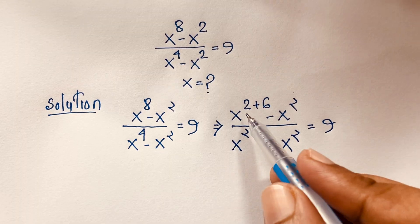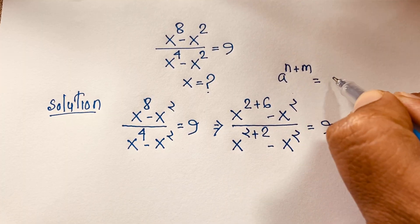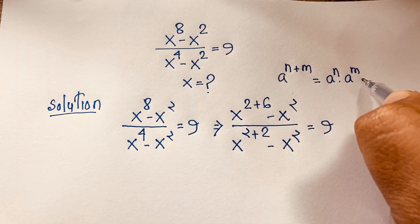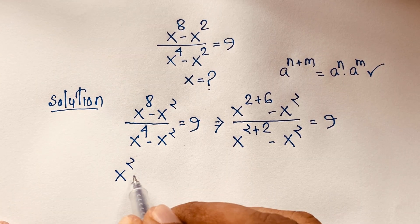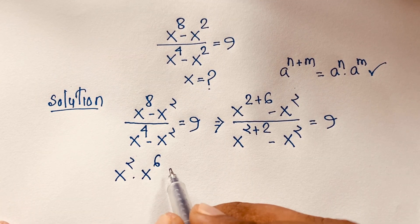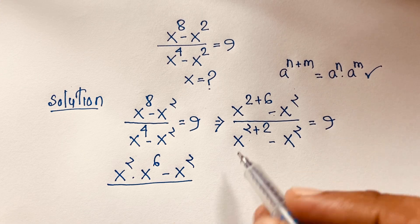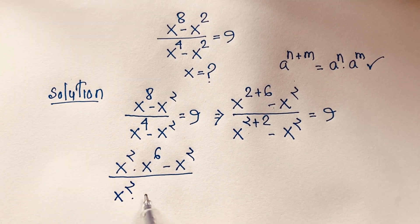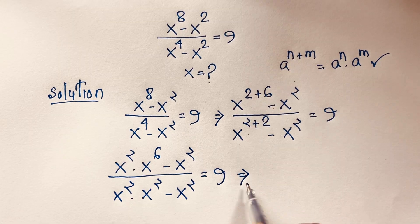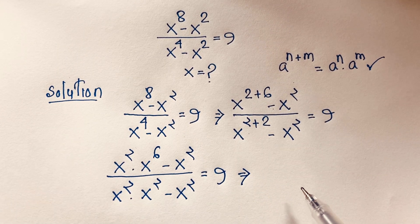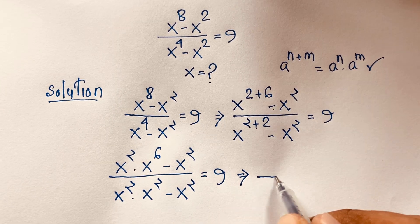According to the exponential formula, a to the power n plus m equals a to the power n times a to the power m. Applying this formula here, the numerator becomes x to the power 2 times x to the power 6, minus x to the power 2. The denominator becomes x to the power 2 times x to the power 2, minus x squared. You can see that x to the power 2 is common in both numerator and denominator.